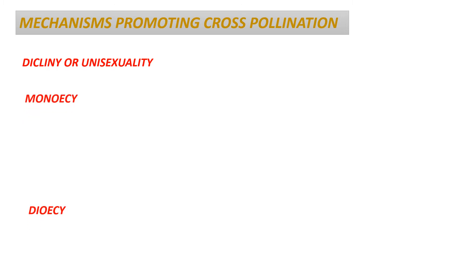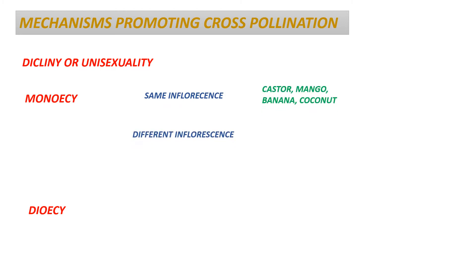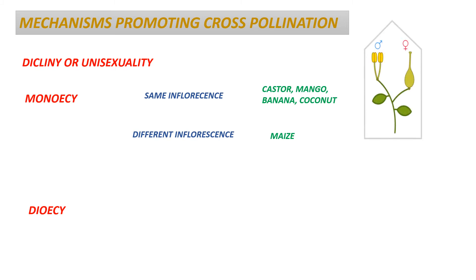Monaceous is a condition where the staminate and pistillate flowers are present in the same plant. These flowers may be present in the same inflorescence or in different inflorescences. Plants like castor, mango, banana, and coconut have these flowers in the same inflorescence, while plants like maize have these flowers in different inflorescences. In simpler terms, monaceous condition may be described as having a single home, that is these flowers are present in the same plant.